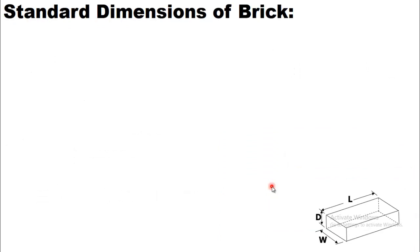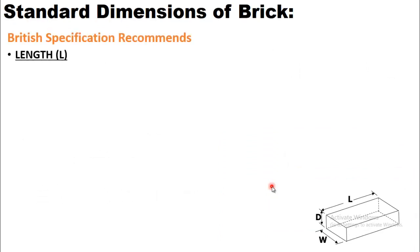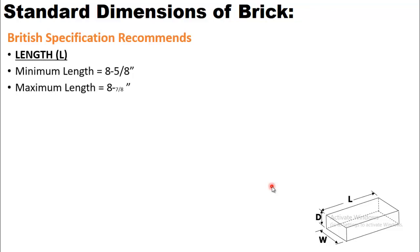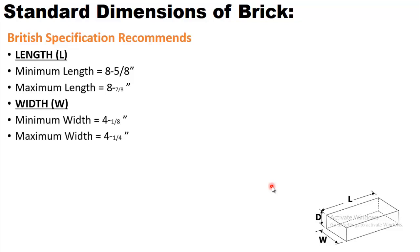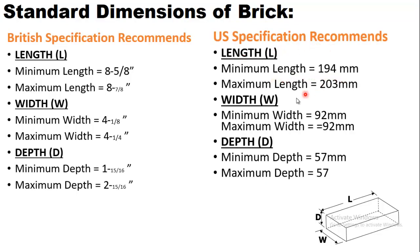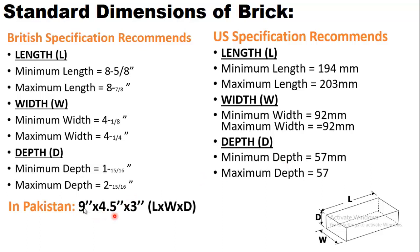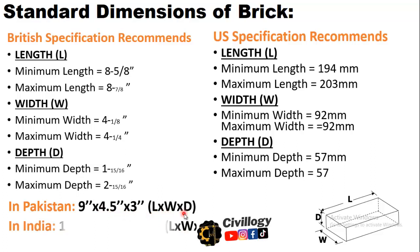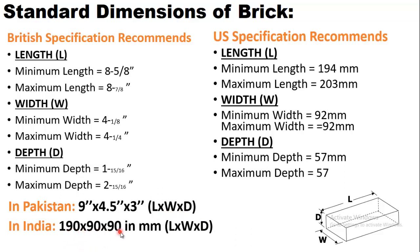What are the standard dimensions of bricks? In British specification, the recommended length is shown on screen. In US specification, it recommends a minimum length and maximum lengths as shown. In Pakistan the standard size of a brick is 9 inches by 4.5 inches by 3 inches, which is length times width times depth. In India it is 190mm by 90mm by 90mm, length times width times depth. These are the standard dimensions in common practice in different regions of the world.